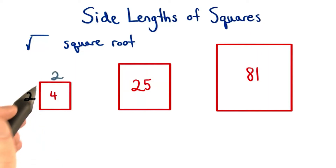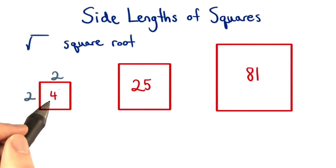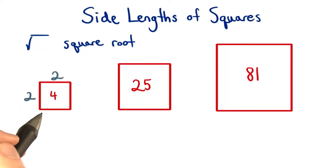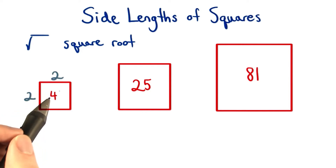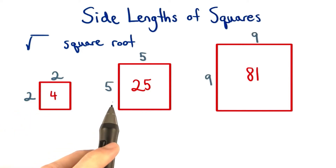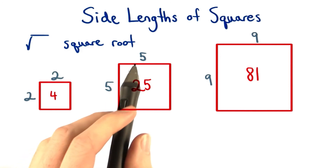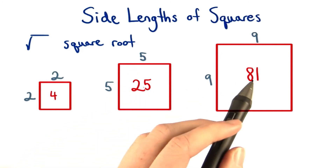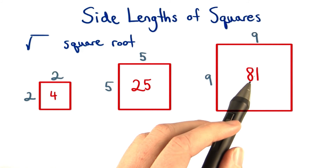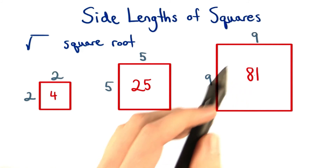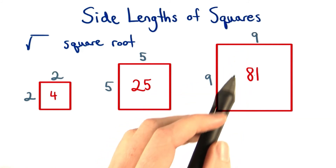We square, or multiply the two side lengths together, to get the area. So this first side length would be 2, since 2 times 2 equals 4. The second square would have a side length of 5, since 5 times 5 equals 25. And the last square would have a side length of 9, since 9 times 9 equals 81.